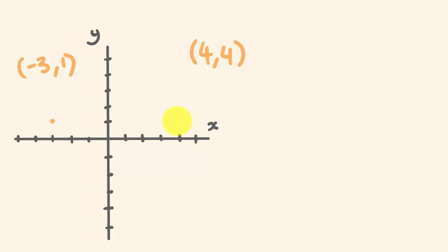And 4 and 4, so 1, 2, 3, 4, and up 4, 1, 2, 3, 4, which would be around about here. Okay, and so we're going to work out the distance between these two points here, okay, so this distance.